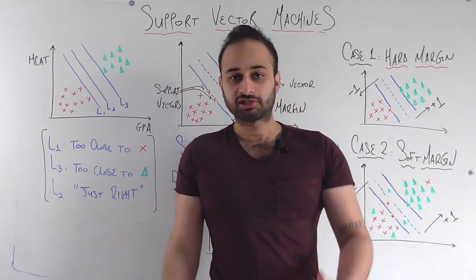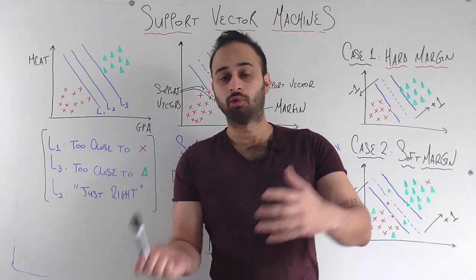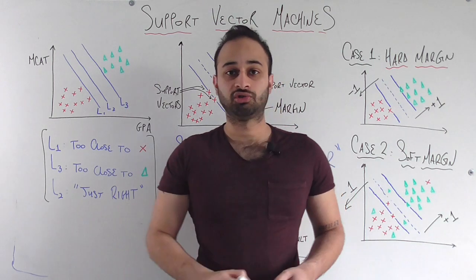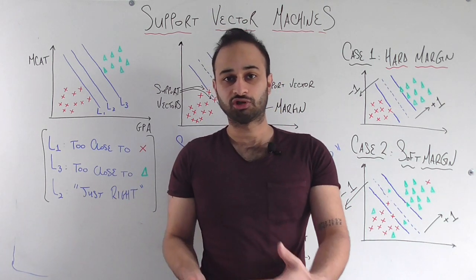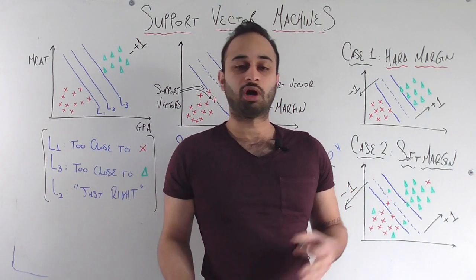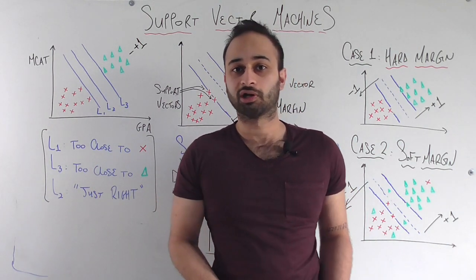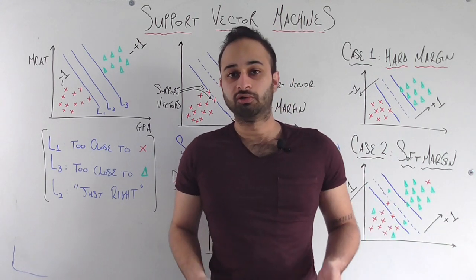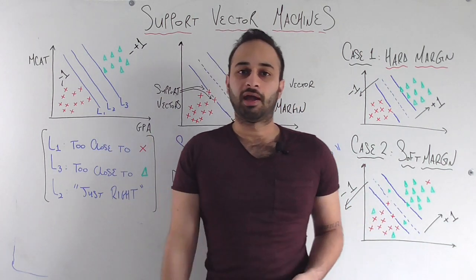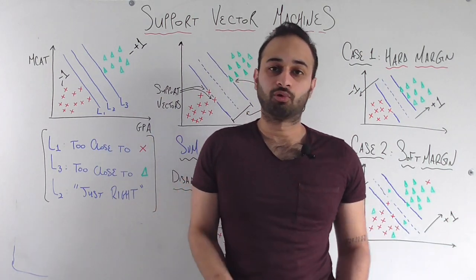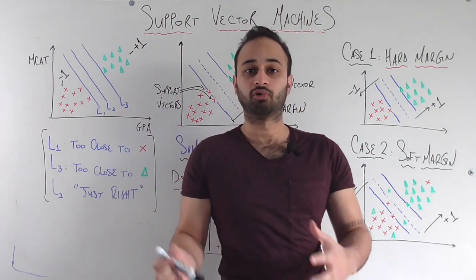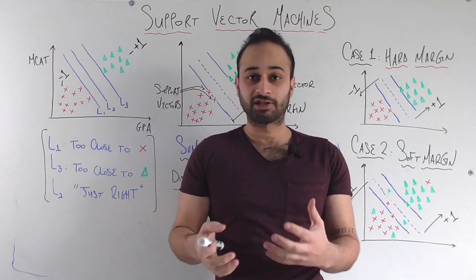As always, we're going to have a context. So let's say that you are trying to predict if someone will or will not get into their top choice medical school. So we have these green triangles, who are students who do get into their top choice medical school, so we're going to label them as plus one. And let's say we have these red X's, which are students who do not get into their top choice medical school, and we're going to label them as negative one. The two predictors we'll be using, just so we can plot things in two dimensions, are their GPA and their MCAT score. And as you probably would have expected, people who are getting better GPAs and scores are generally getting into their top choice school, and people who are getting lower on those two metrics are not.